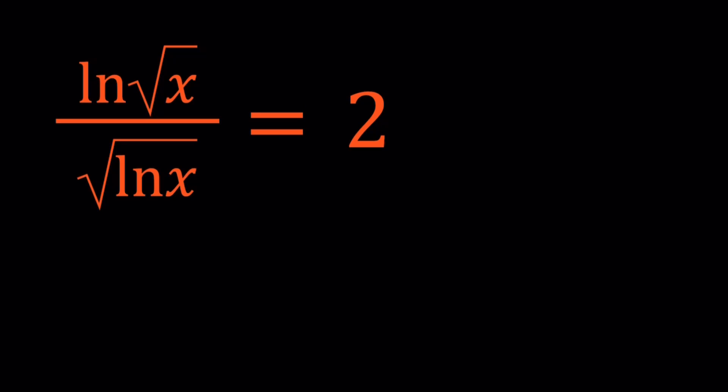First of all, I want you to notice that ln x cannot equal 0, because we have it in the denominator. So this implies that x cannot equal 1. So x has to be different from 1.